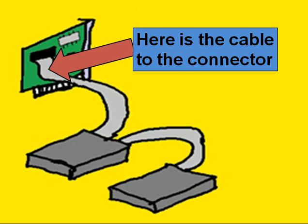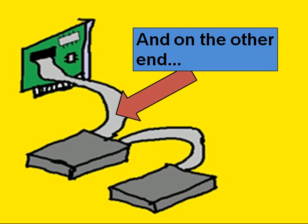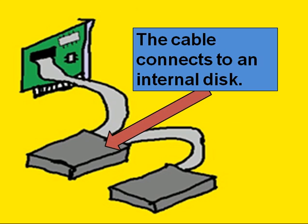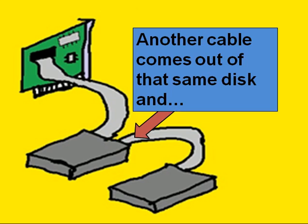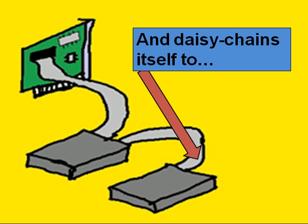On the other end the cable connects to an internal disk. Another cable comes out of the same disk and daisy chains itself to another disk, right here.